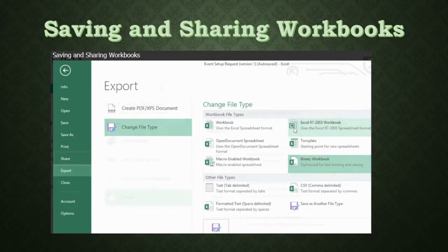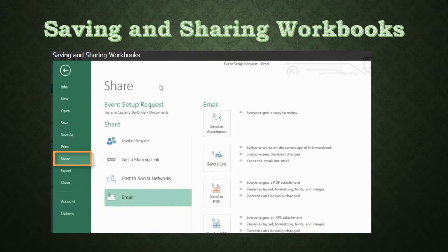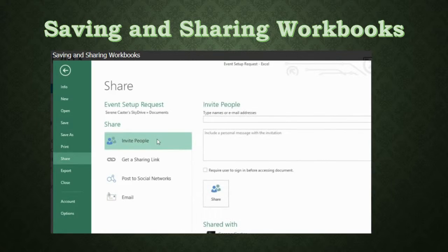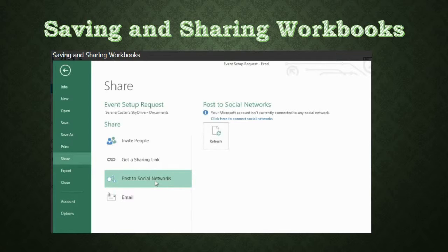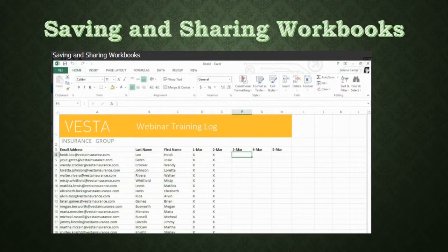Let's take a look at more ways you can share by going to Share in the backstage view. Your choices vary depending on whether the file is saved to SkyDrive. If it is saved to SkyDrive, you can share it online and invite specific people to collaborate — letting you work on the exact same file with friends, coworkers, and other SkyDrive users without tracking multiple versions. Alternatively, you can get a shareable link or post the file to a social networking site, though it's generally best to invite specific people unless a wider audience needs access. How you choose to save and share in Excel 2013 is up to you.